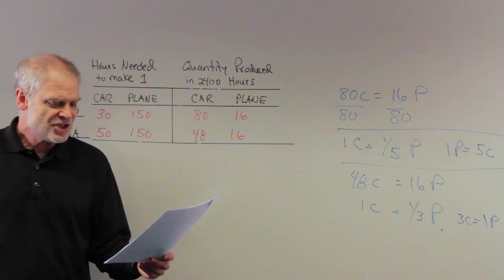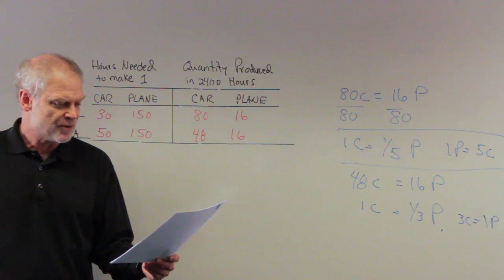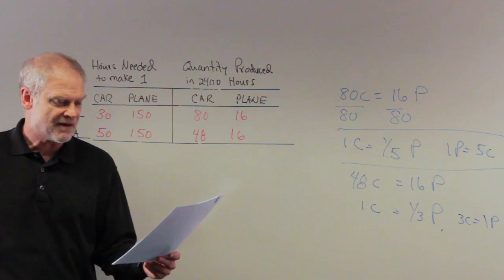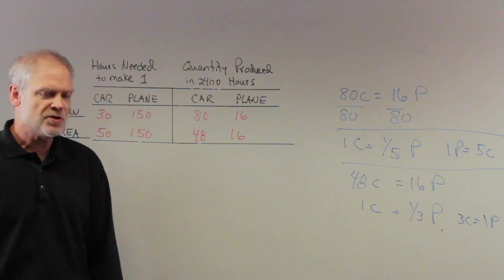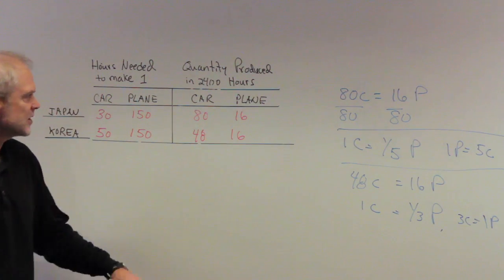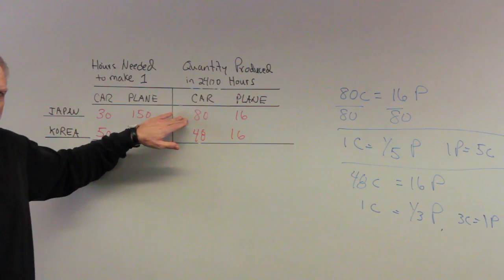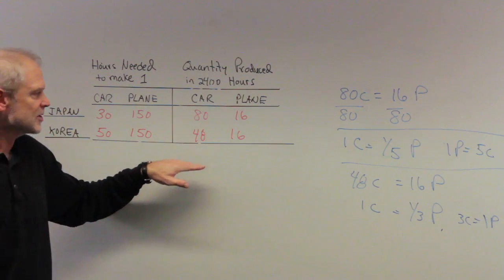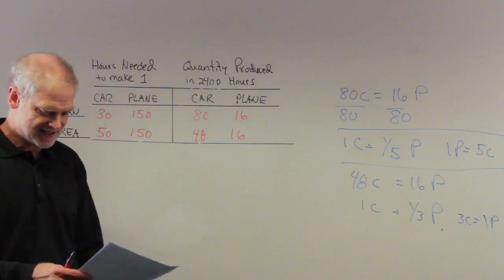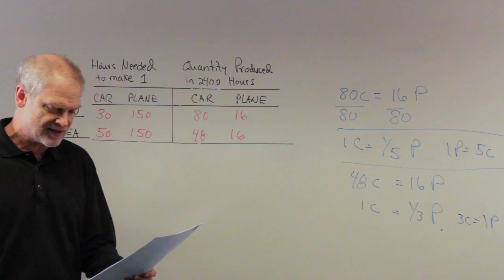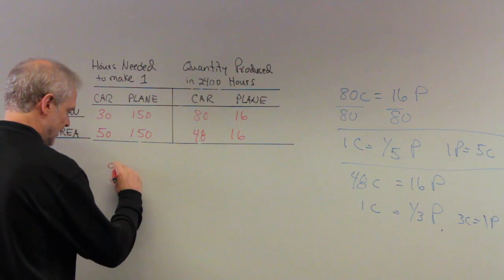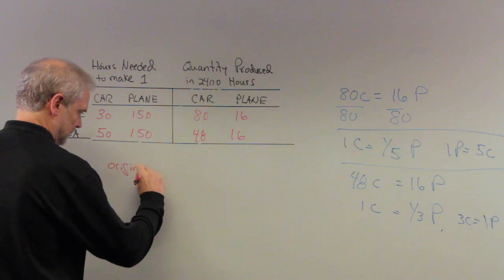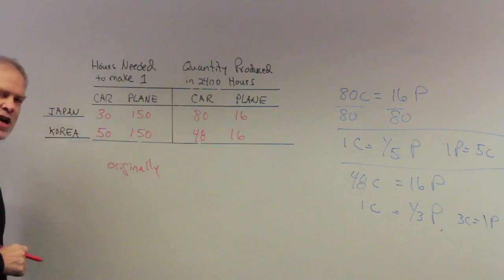Now, it says each country spends all its time producing the good in which it has a comparative advantage. So Japan is going to spend all its time devoted to cars. And Korea is going to spend all its time devoted to planes. That's after specialization. It says originally, and I'll write it down here, this is originally, each country devoted half their time to the production of each good. So this is Japan, and this is Korea.